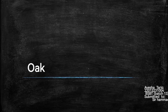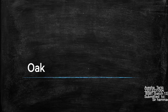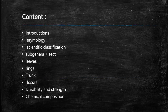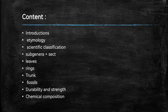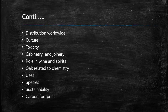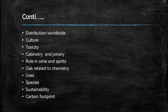Today we are going to discuss the topic Oak, which is a tree. It includes introduction, etymology, scientific classification, subgenera plus sections, leaves of oak, rings, trunk, fossils, durability and strength, chemical composition of oak, distribution worldwide, culture, toxicity, cabinetry and joinery, its role in wine and spirits, how oak is related to chemistry, its uses and applications, species, sustainability and carbon footprinting.